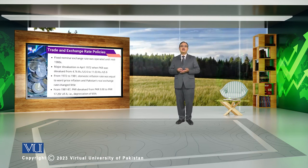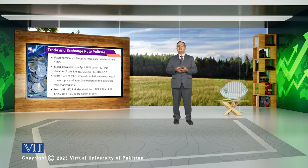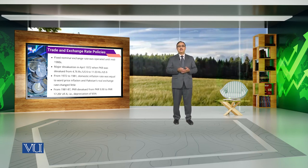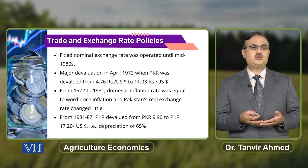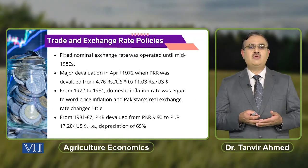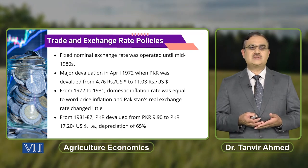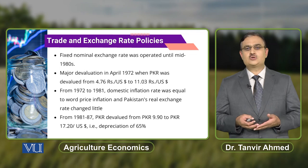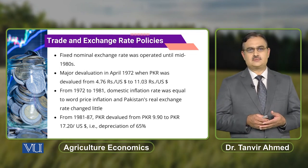When we talk about the exchange rate, the fixed nominal exchange rate was operated until mid-1980s. There was a major devaluation observed in April 1972 when the Pakistani rupee was devalued from 4.76 rupees per US dollar to 11.03 rupees per US dollar.